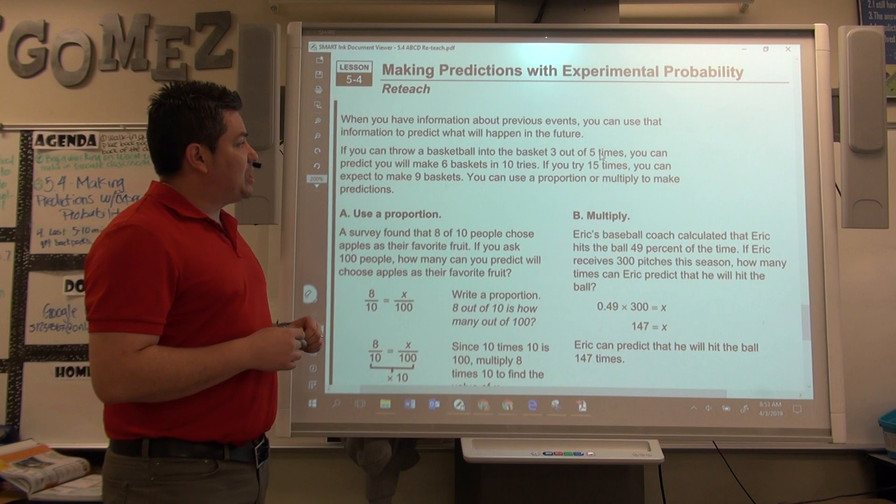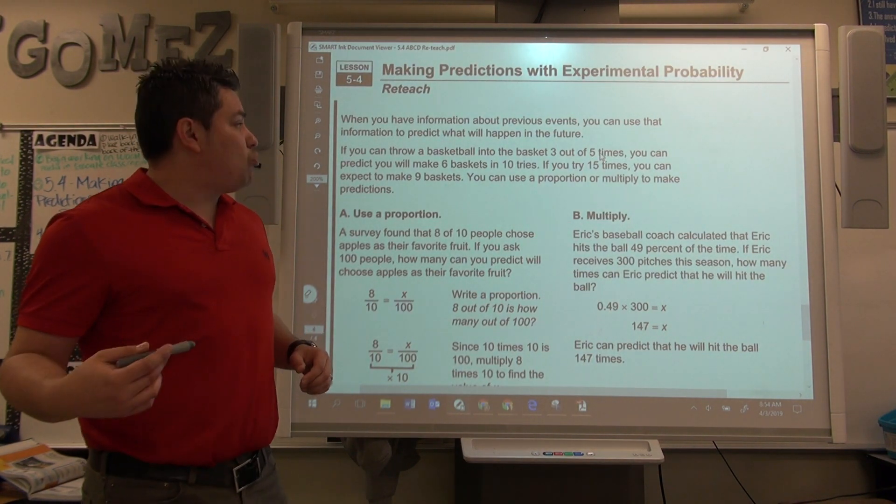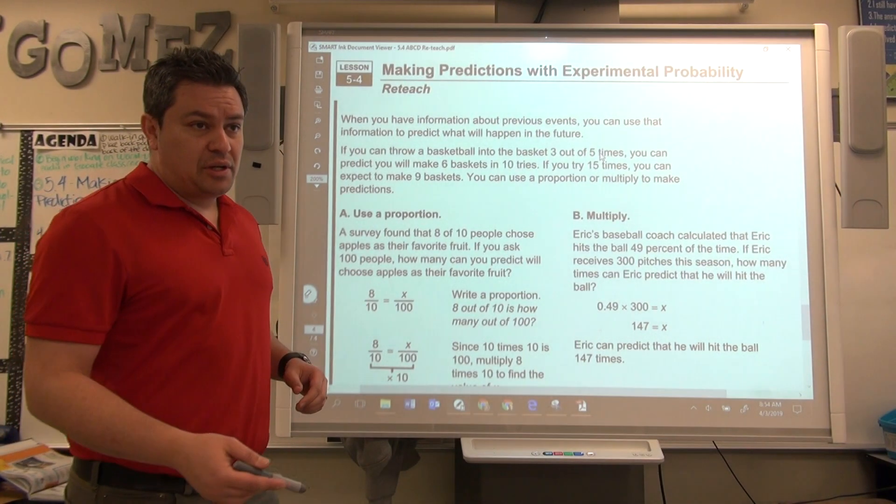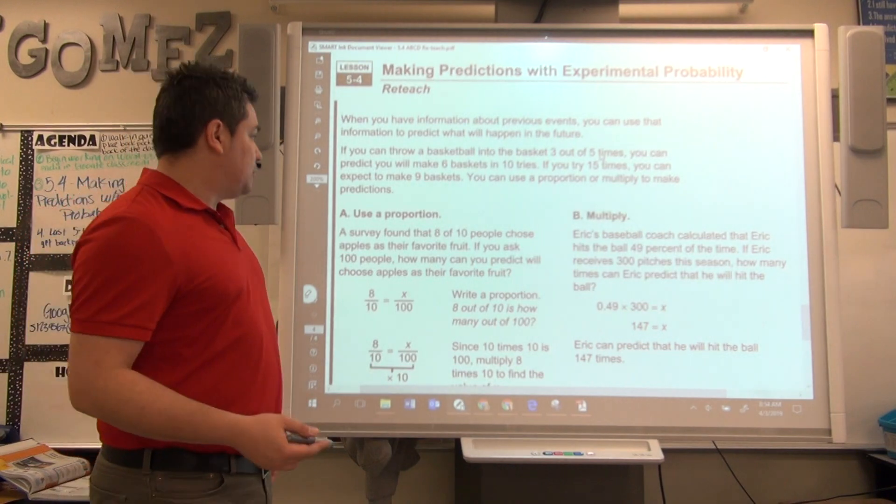When you have information about previous events, you can use that information to predict what will happen in the future. Now it doesn't necessarily mean that it's going to happen, but it's a high possibility that it will.